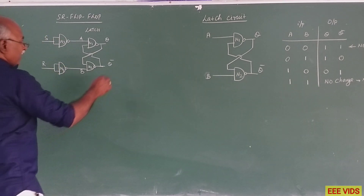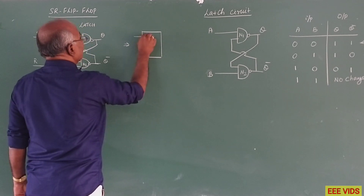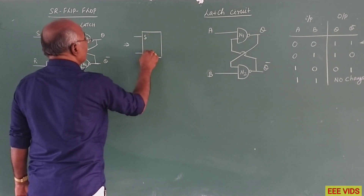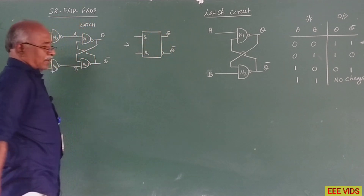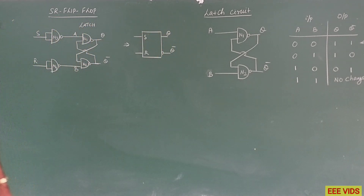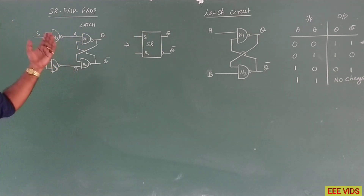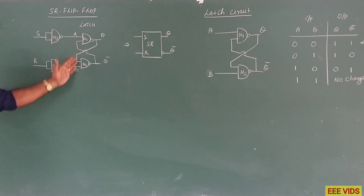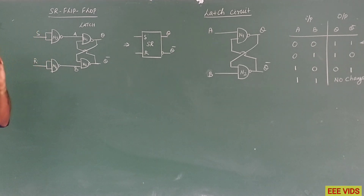So this is the SR flip flop. Now, this is the truth table. This is the latch circuit with n3 and n4. The two inputs are short, so n3 and n4 are acting as a NOT gate.